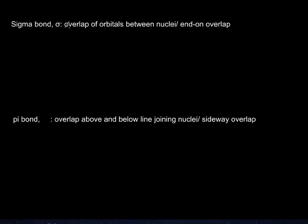Sigma covalent bonds are overlap of atomic orbitals between the nuclei, and you can also refer to it as head-on or end-on overlap. For example, when hydrogens share electrons with each other, these two electrons between the nuclei are referred to as a sigma covalent bond.